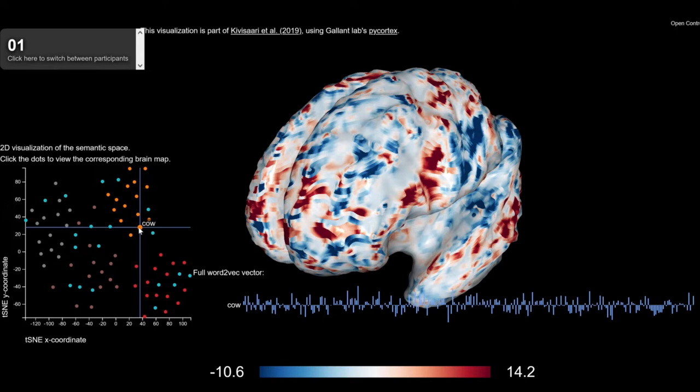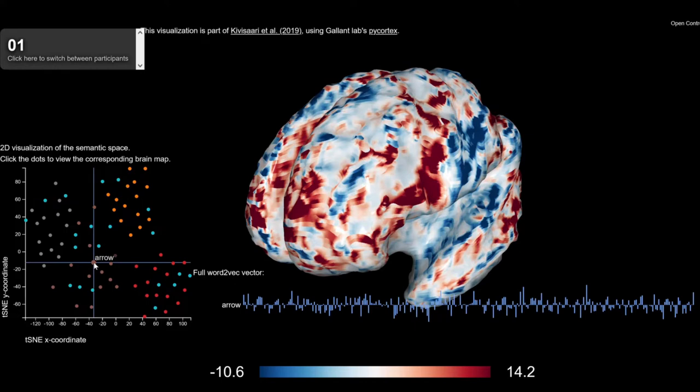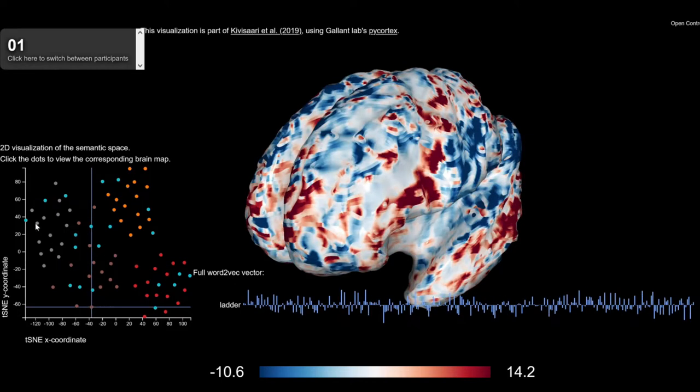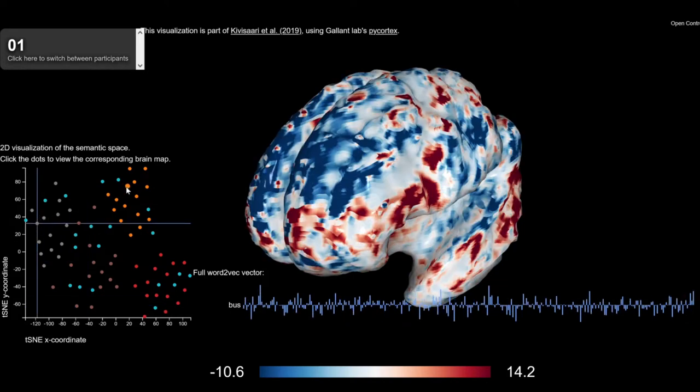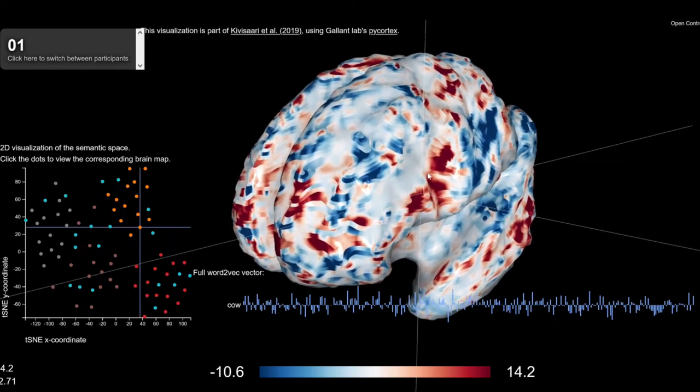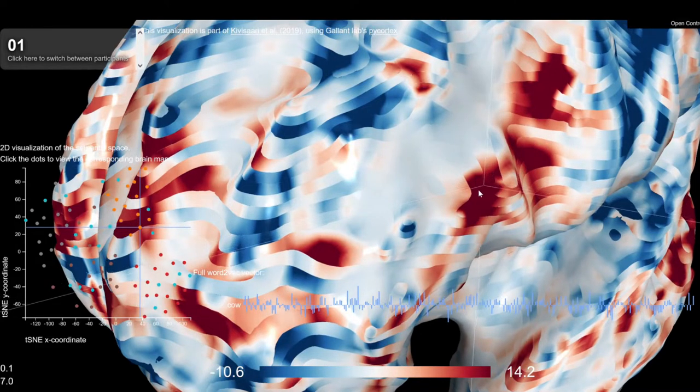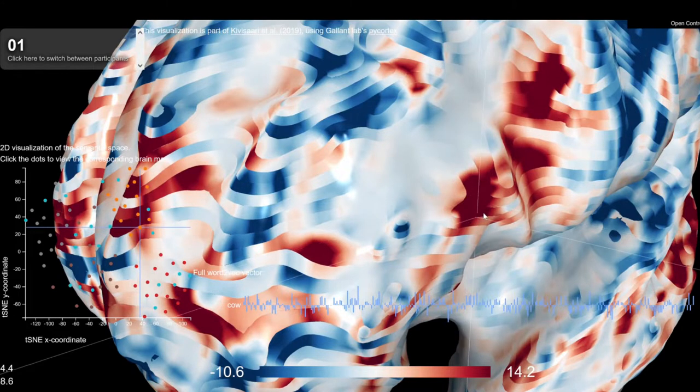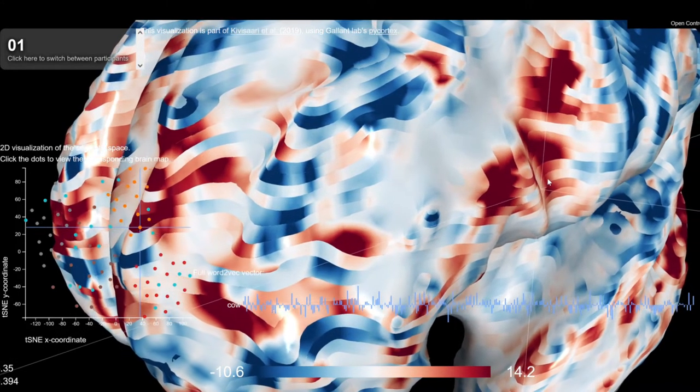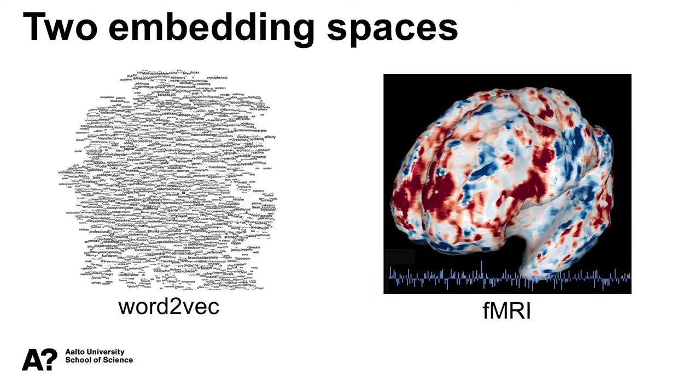Now, here is the interesting thing. The closer words are in the embedding space, the more similar the corresponding brain activity patterns. In a way, the brain activity we record acts as an embedding space of its own. If you treat every voxel as a dimension in embedding space, you get an embedding space with a crazy high dimensionality. And the pattern of activity across the voxels represents a location in this embedding space. So now we have two embedding spaces. On the one hand, we have the embedding space created by the Word2Vec model using a huge amount of text. And on the other hand, we have an embedding space defined by the brain activity as recorded through fMRI.